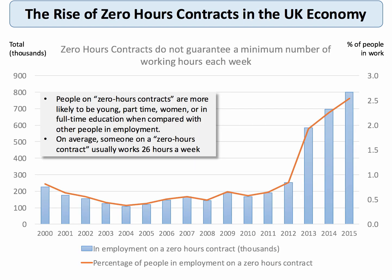Here's an example of the growth of the flexible labour market in the UK, which is quite controversial: the rise of zero hours contracts. A zero hours contract is where somebody is not guaranteed a minimum number of hours working each week.